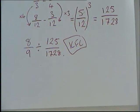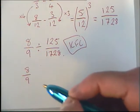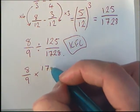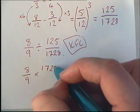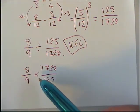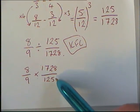Keeping our first fraction, so we'll keep our 8/9, multiply it by 1,728/125. So we've changed our sign and we've flipped our fraction the other way up.